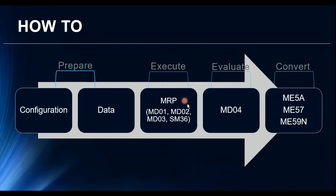Then we go to the execution part, where we can execute MRP for the material using the following methods: MD01 executes MRP at the plant level for all materials; MD02 executes MRP for one particular material along with its complete bill of materials, exploding the full BOM; MD03 is single-item single-level planning, meaning it does not execute MRP for lower-level BOM items; and SM36 is used to define a background job for automatic MRP planning.